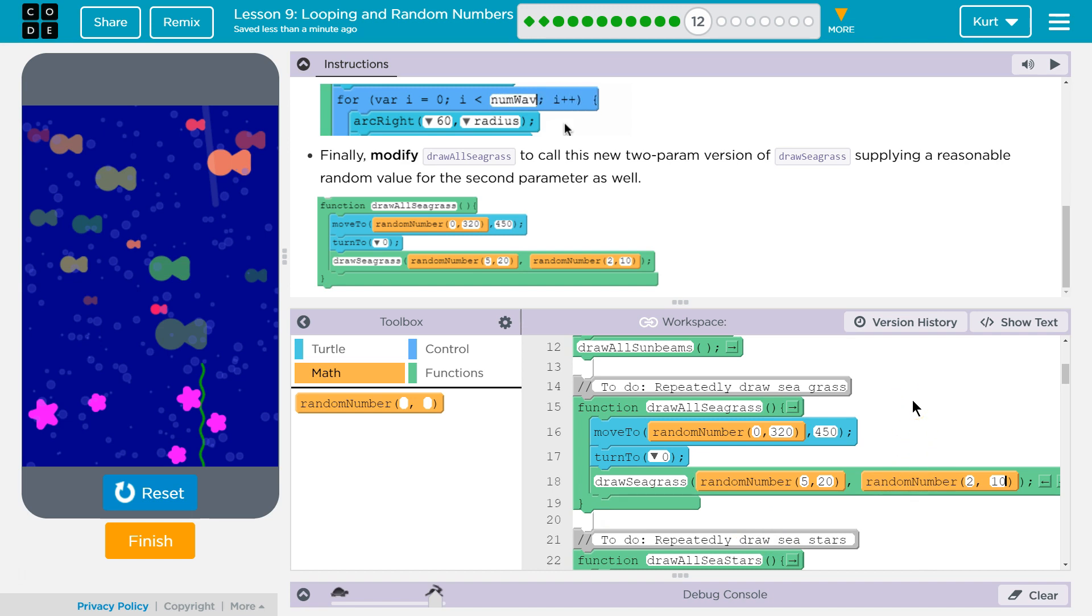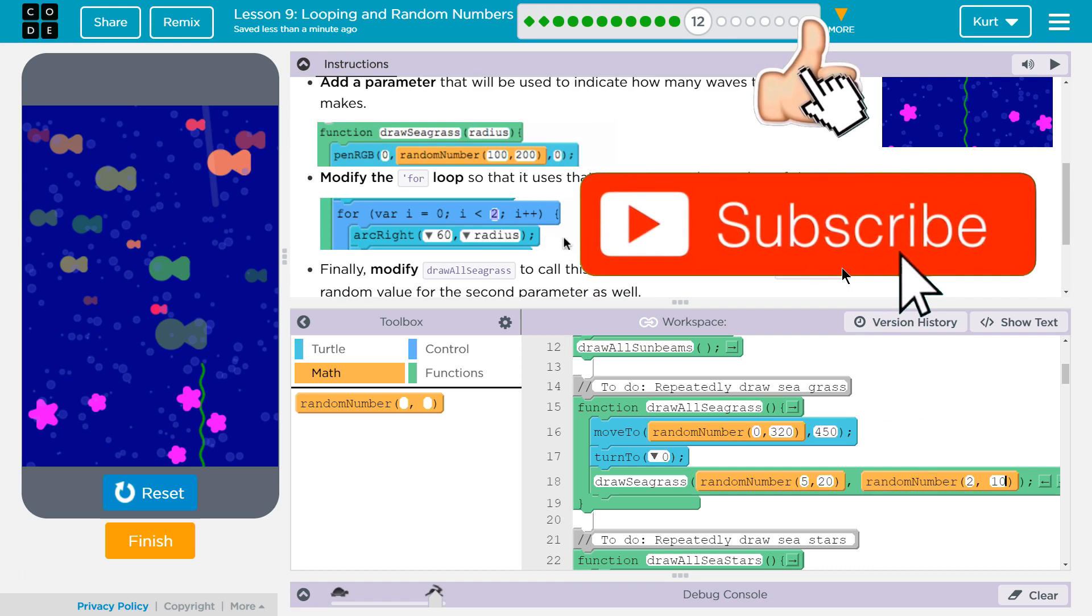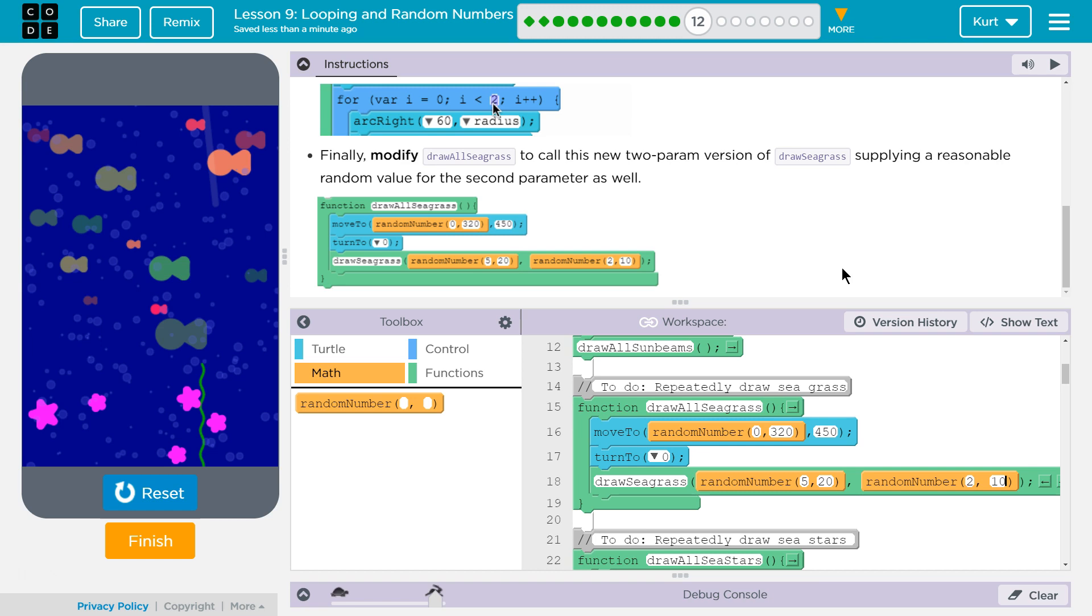And the way we're making this represent the number of curves, it is used as the number in the for loop, right? So it's used as the number that's going to limit the amount of times our for loop runs. That's super cool. Let's keep going.